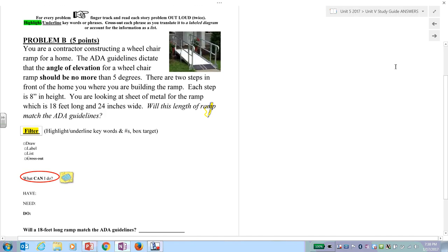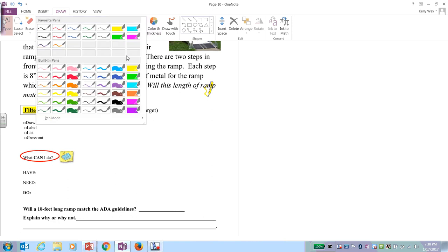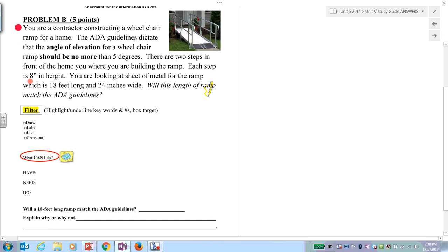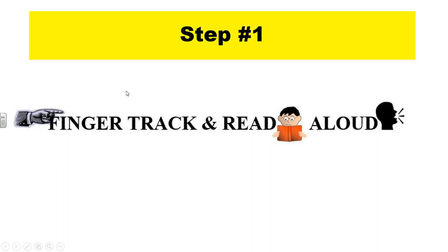Welcome back. Problem B. Step number one: you're going to finger track and read out loud. Put your finger right there where the red dot is, track with your finger on the paper, and read this out loud.